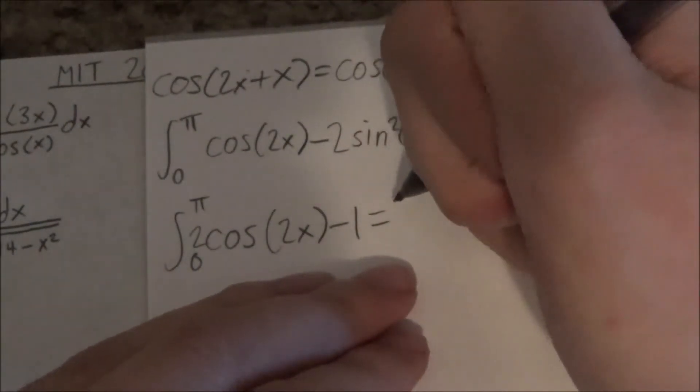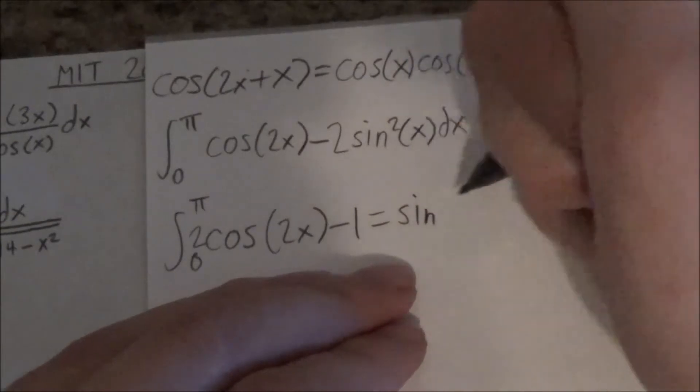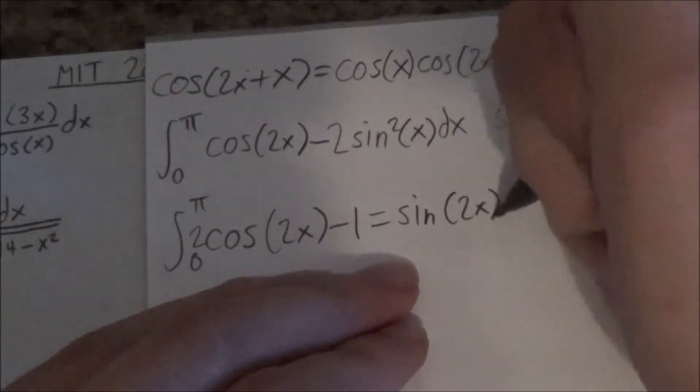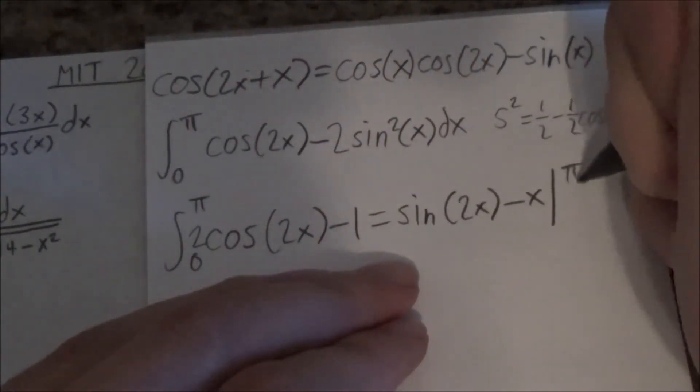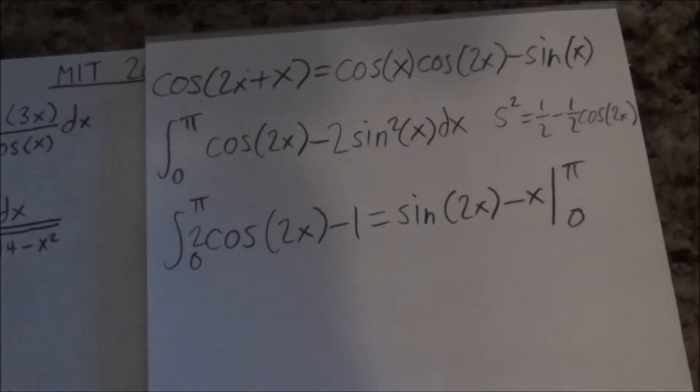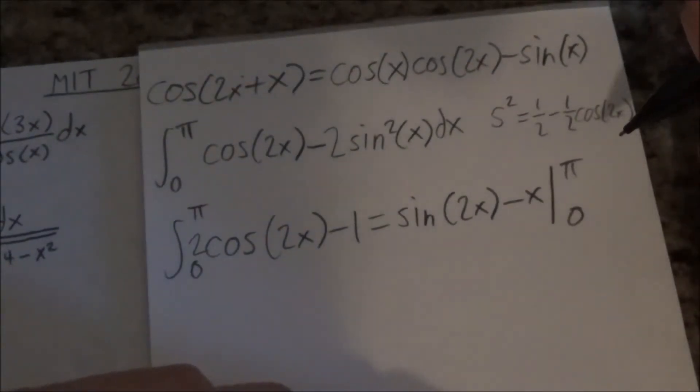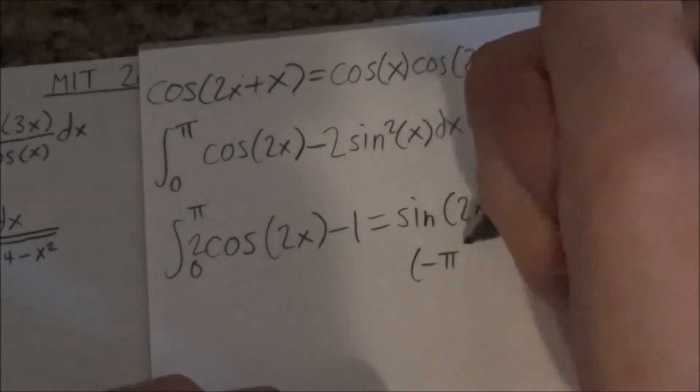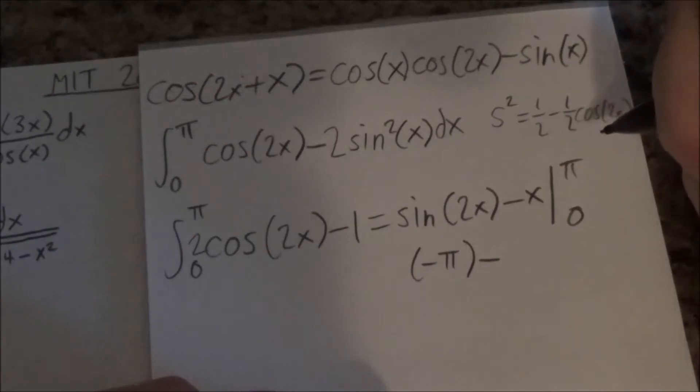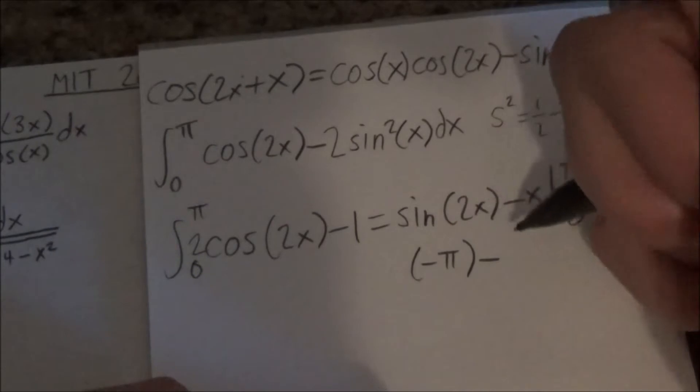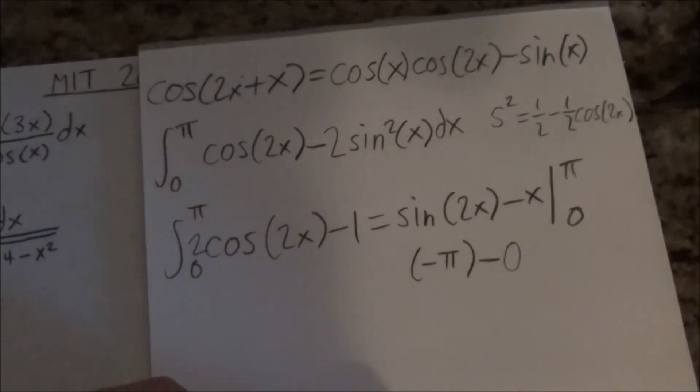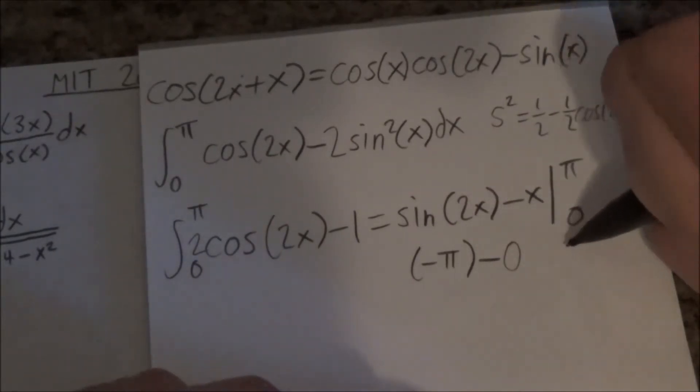So that's sine 2x minus x, pi to zero. I really hope this is correct. So sine 2 pi, that sounds like zero. So that's negative pi. Minus zero. So this is negative pi.